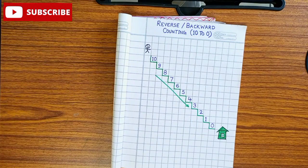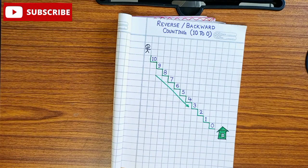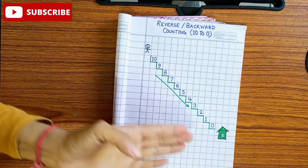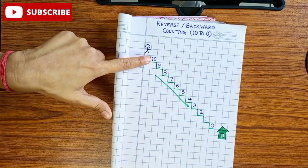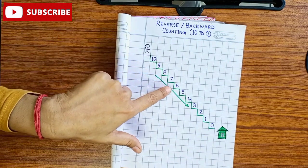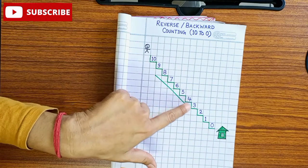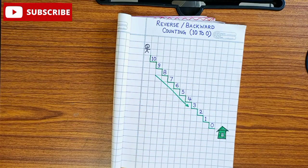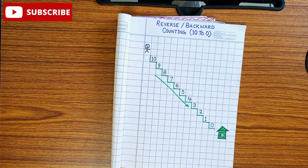This is called reverse counting. What do we call it? Reverse counting. For reverse counting, we have to move back. Just like 10, 9, 8, 7, 6, 5, 4, 3, 2, 1, 0. Good.